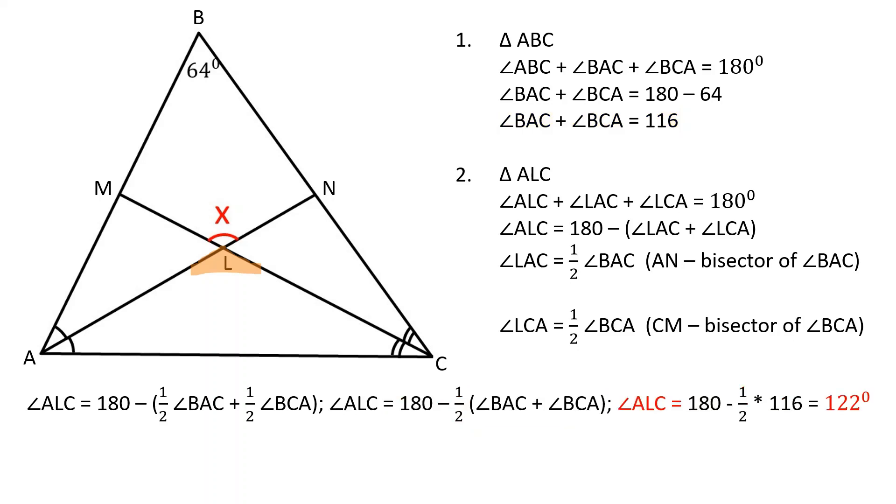Angle ALC is equal to 122 degrees. Angles ALC and MLN are vertical and are therefore congruent. Angle MLN is equal to 122 degrees.